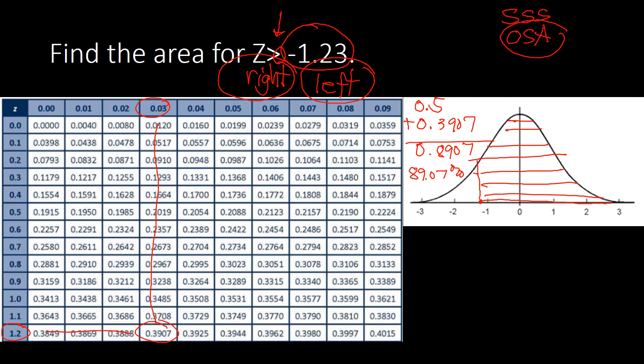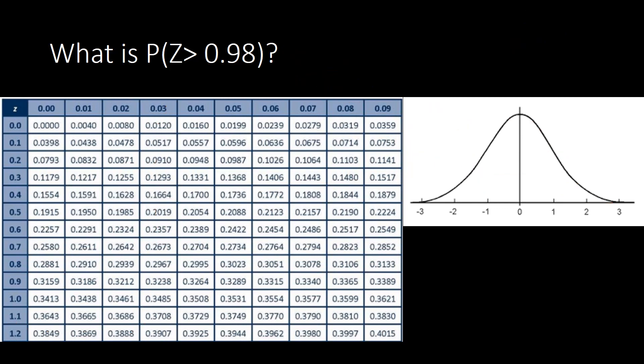Adding 0.5 and 0.3907 gives us 0.8907, or 89.07%. We can clearly see that this is indeed the correct area because, looking at the illustration, it is greater than half of the curve, which makes sense.